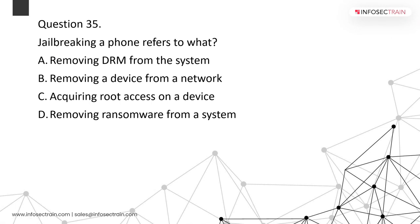Jailbreaking a phone refers to privilege escalation. On iOS devices it is called jailbreaking; on Android devices it is called rooting. We do this to modify the system — only root access allows you to modify it. Predefined applications that cannot be uninstalled require privilege escalation from a normal user to a root user, which is what jailbreaking or rooting accomplishes.